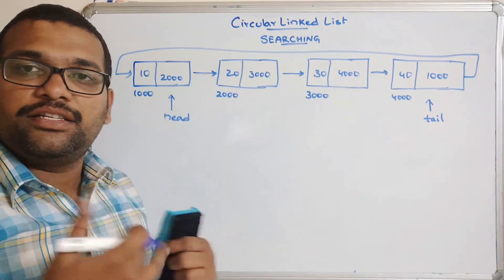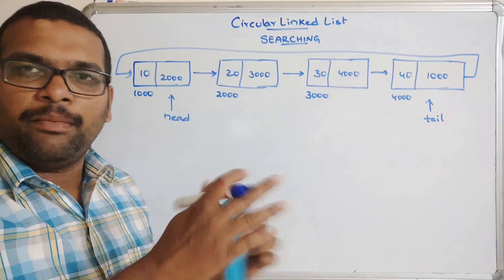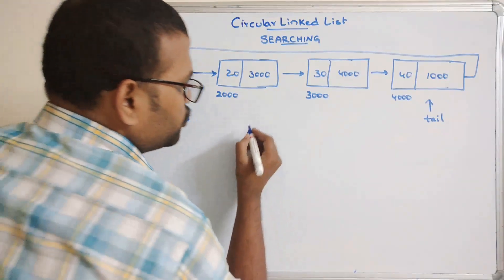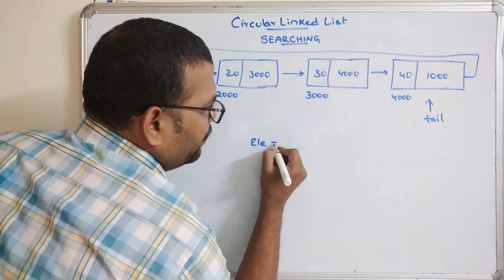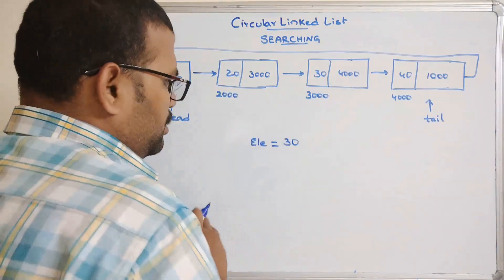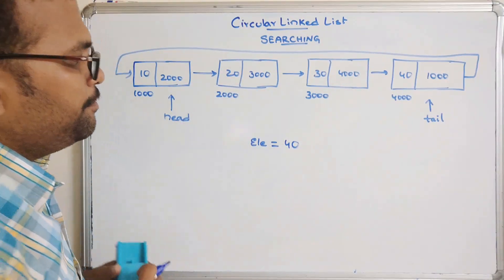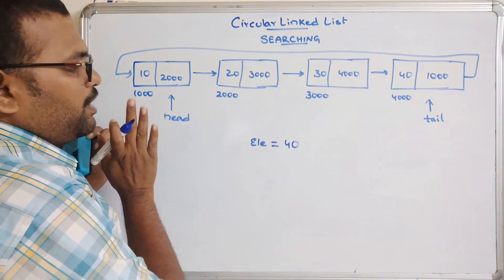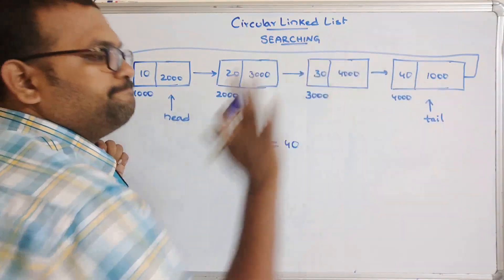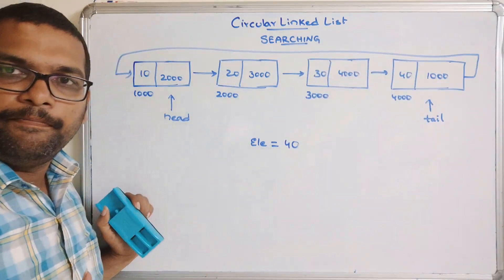I am not talking about insertion, deletion, creation, or display here — I am directly using the search operation. I will post links to all the remaining operations in the description. Now, we need to take an element to be searched. Let us take the element 40. We need to travel from the first node to the last node, comparing 40 with all the data: 40 compared with 10, 40 compared with 20, 40 compared with 30, and 40 compared with 40.